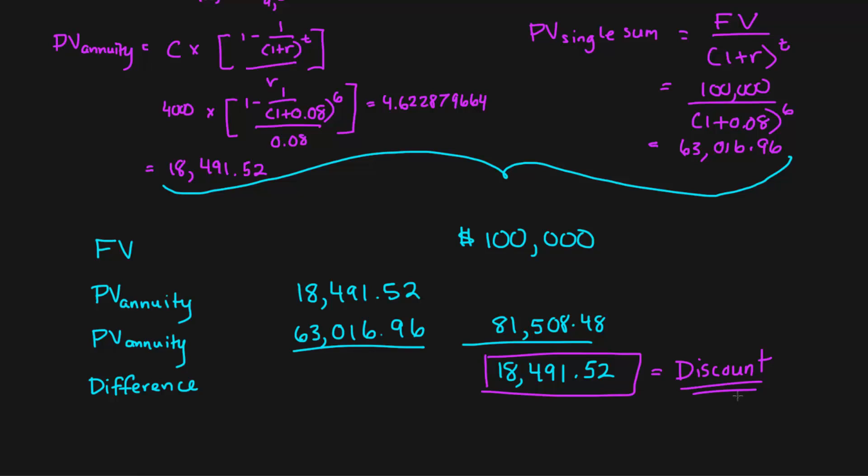And this difference right here is going to be your discount. There we go. We got our discount. Next, in the next video, I'm going to actually go through an amortization table so you fully get it. And then we will report the entries. All right. See you guys next time. Bye-bye.